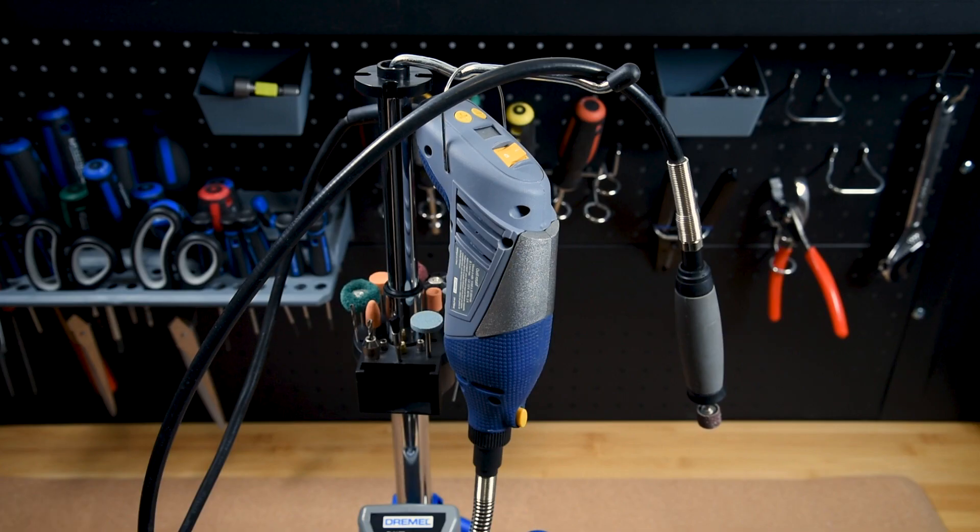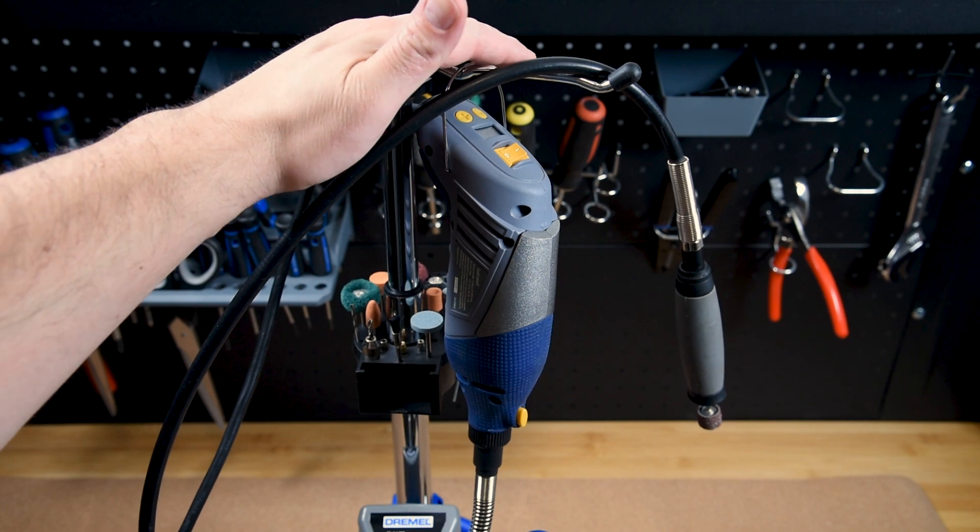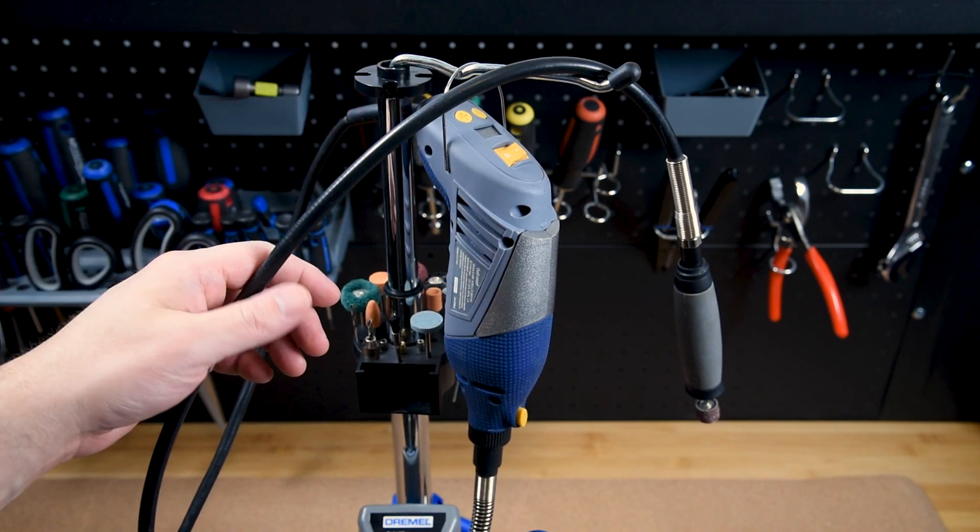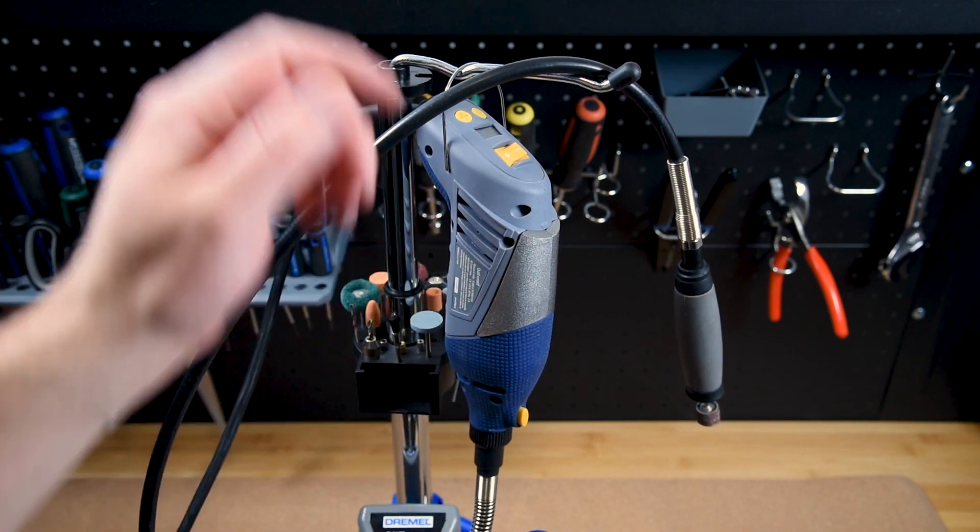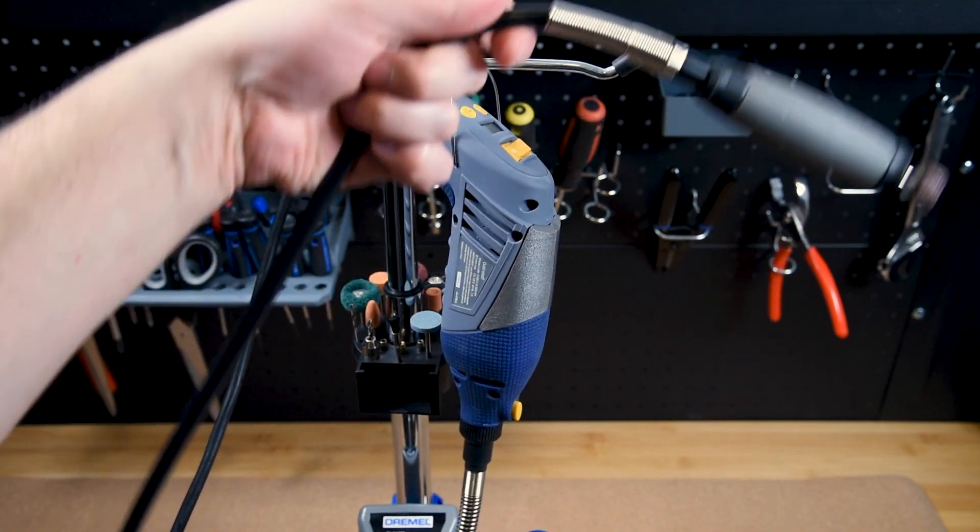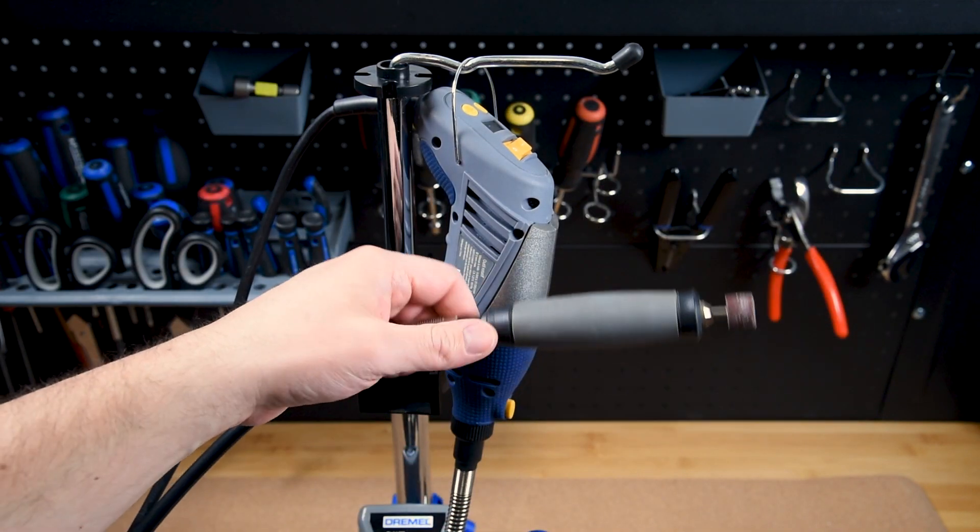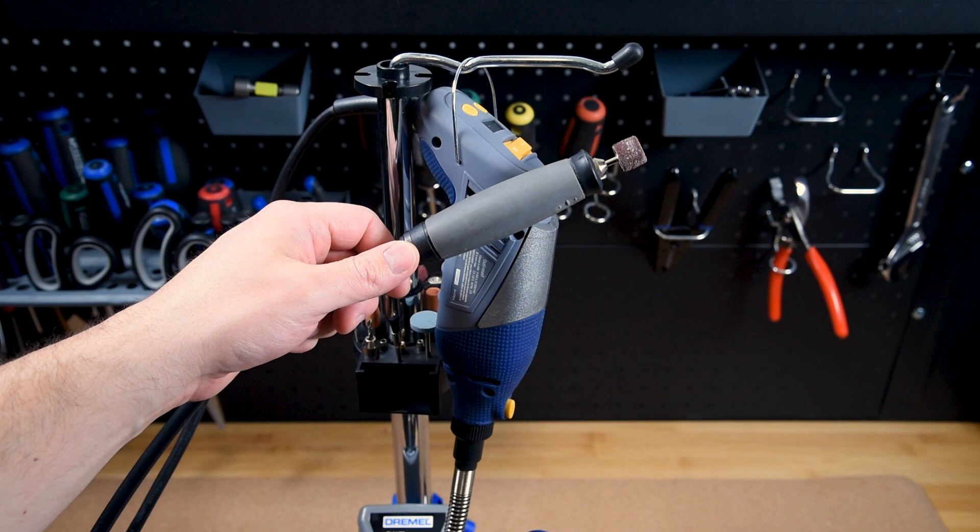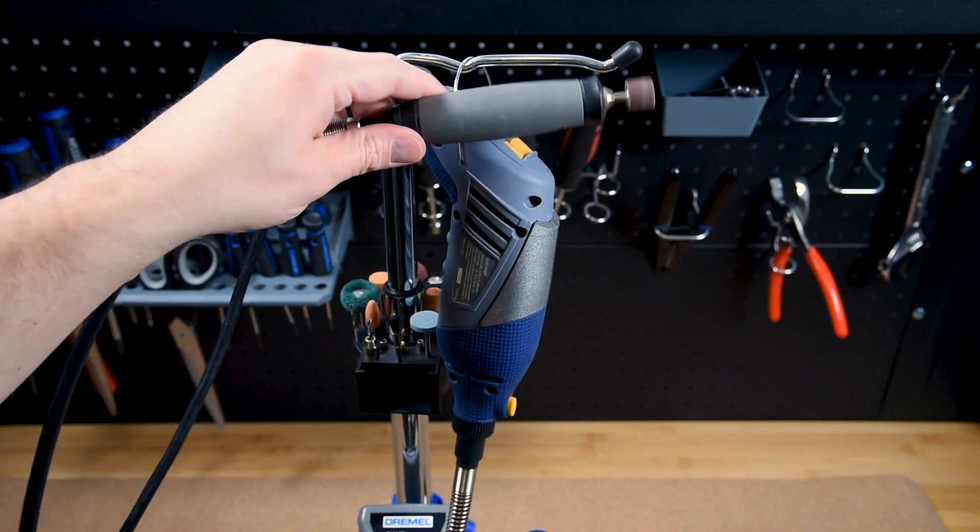The last cool feature of this workstation is that you have this little hanging bar on top that lets you hang both your rotary tool and your flex hose. This lets you work freehand for both sanding and polishing and I found it a very convenient feature that they've added.